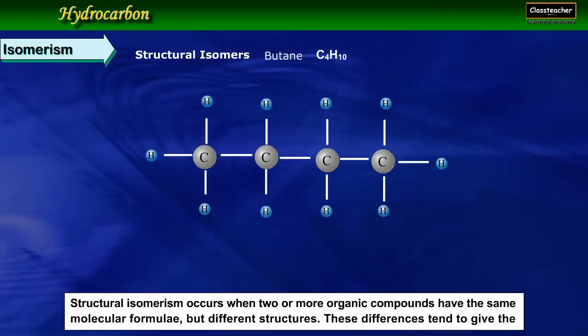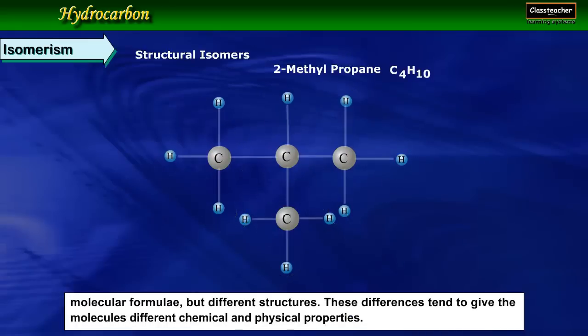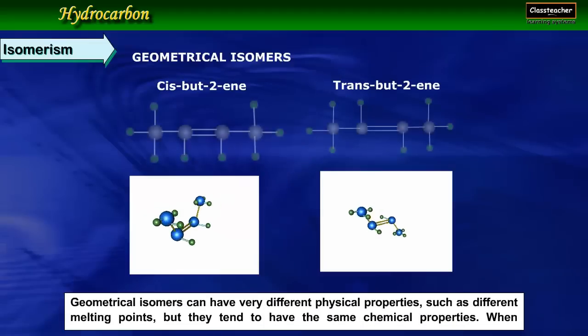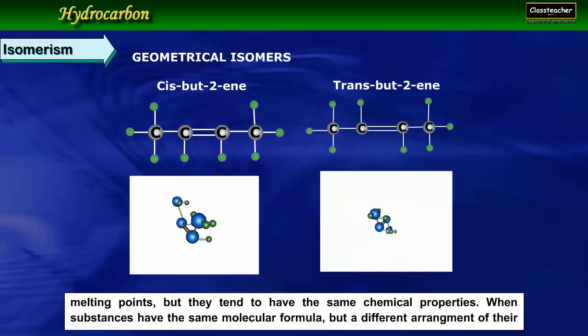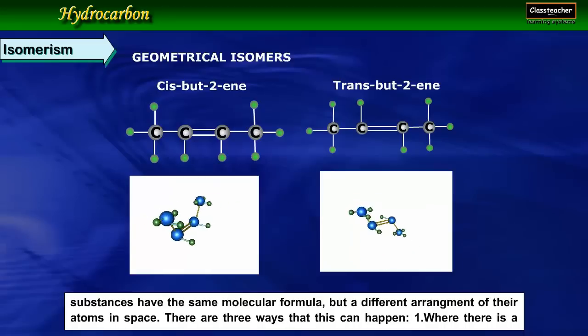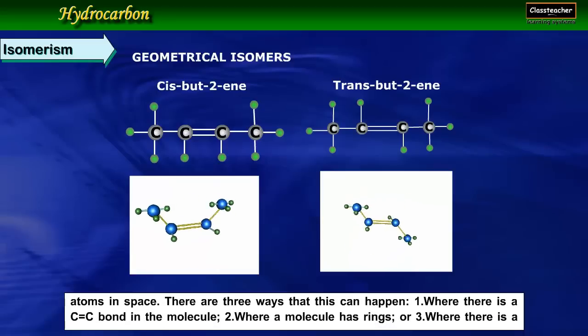Isomerism. Isomerism occurs when two or more organic compounds have the same molecular formula but different structures. These differences tend to give the molecules different chemical and physical properties. Geometrical isomers can have very different physical properties such as different melting points, but they tend to have the same chemical properties. When substances have the same molecular formula but a different arrangement of their atoms in space, there are three ways that this can happen.